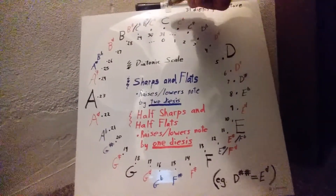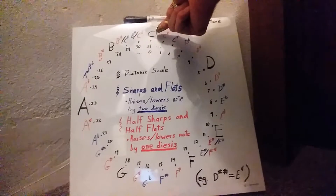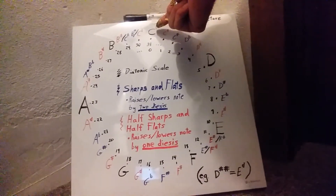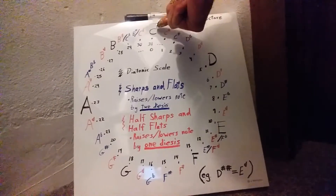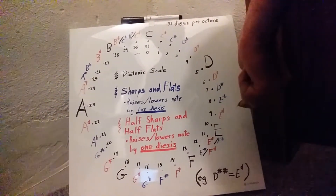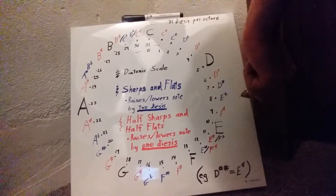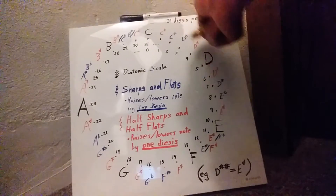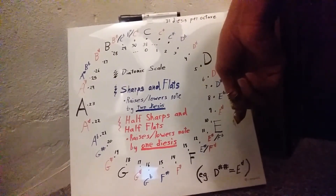And if we start on a C — the minor third is 8 dieses — so we're going to count 8 over and we wind up on E-flat. So as long as we're spelling chords properly, they're going to work out on this wheel, at least for major and minor chords.